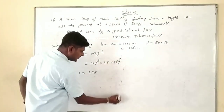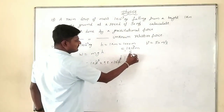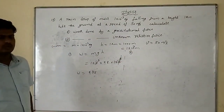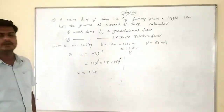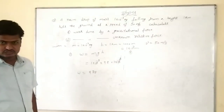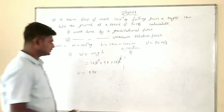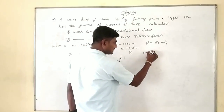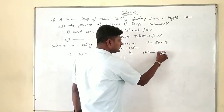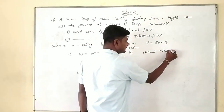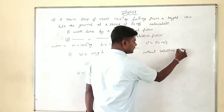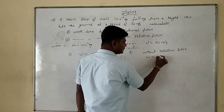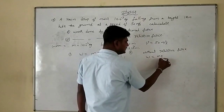Second one: work done by the unknown resistive force. Work done by the gravitational force is the first calculation. Now we need work done by the unknown resistive force.